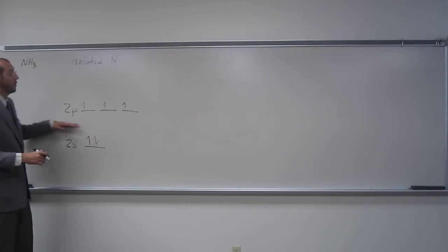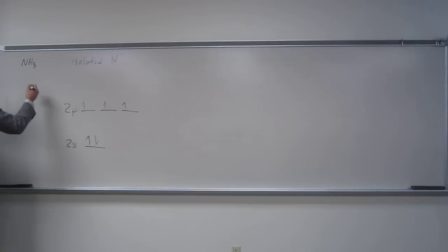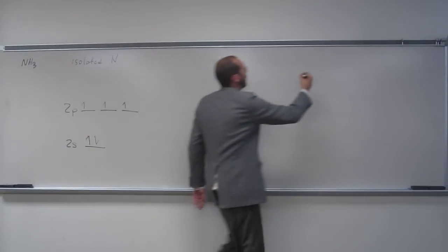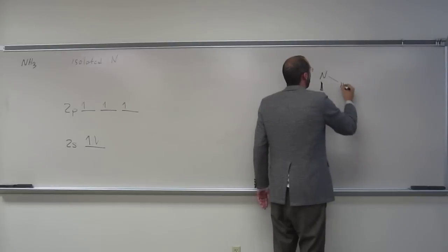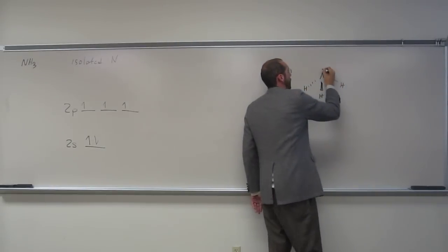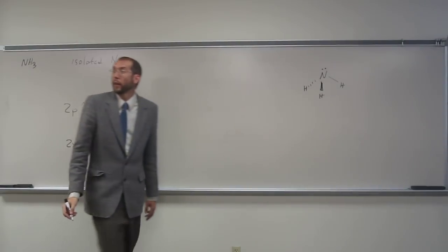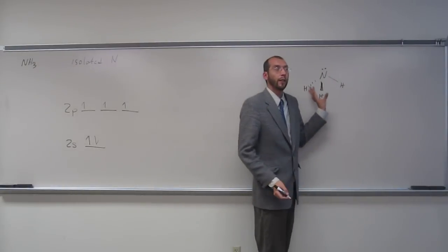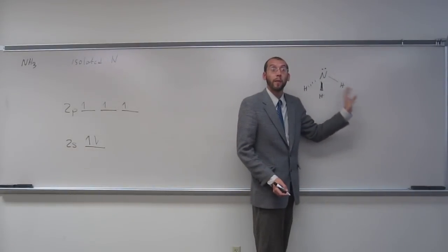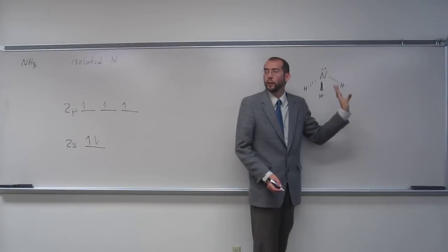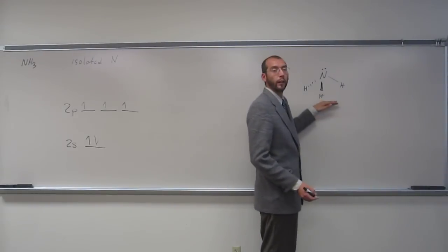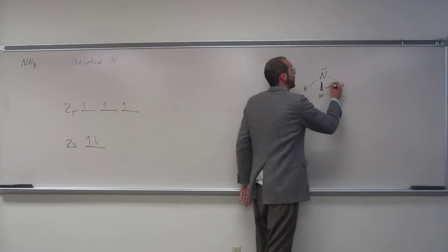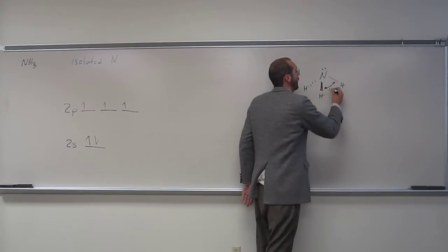So what do we know about nitrogen in ammonia? We know that the structure of ammonia looks something like that. Remember the relative bond angle, so it's very similar to methane. Remember the bond angle of methane? 109.5. Do you remember the bond angle of ammonia? 107.3. So very close to that 109.5.